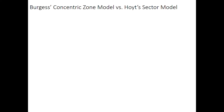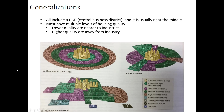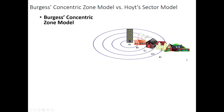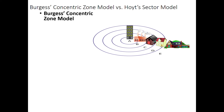We're going to walk through those three models and one last one. First I'll compare the concentric zone model and Hoyt's sector model. The concentric zone model is the round one; the sector model looks like pizza slices or pie slices. 'Concentric' basically means one shape within another, so you can see circles within circles within circles. The concentric zone model has a central business district in the middle, then factories, low-class housing, middle-class housing, and upper-class housing.